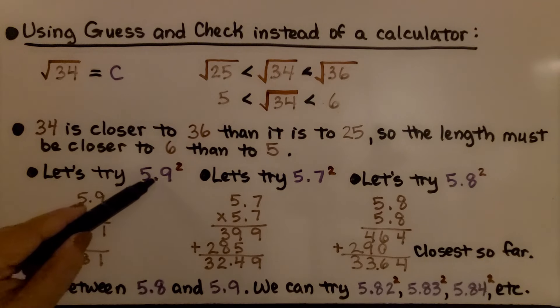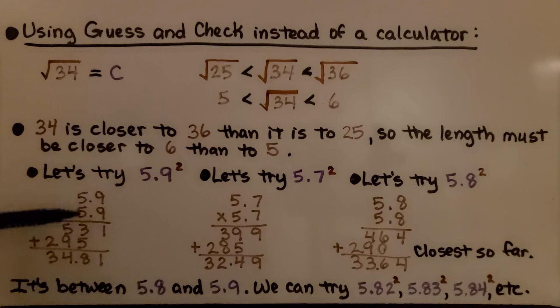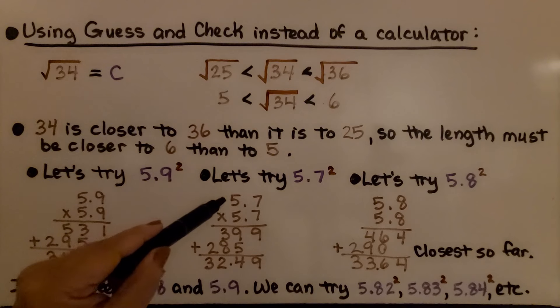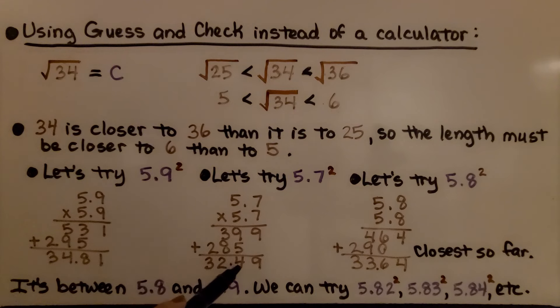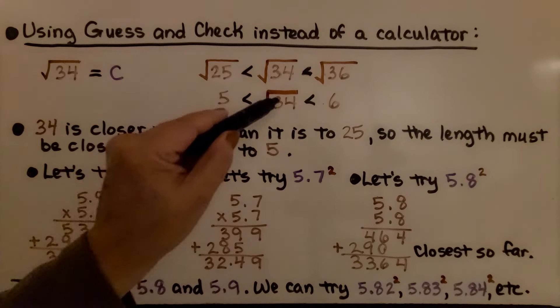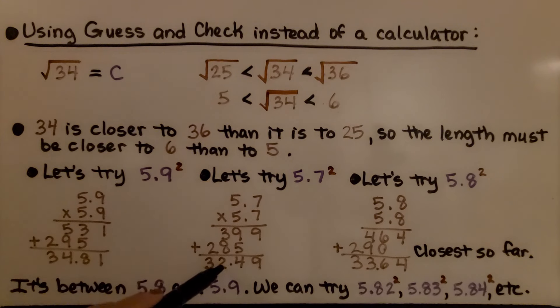Let's try 5.9 squared. We multiply 5.9 times 5.9, and we get 34.81. We went over 34 by 81 hundredths. Let's try 5.7 times 5.7. We get 32.49. That is quite a lot less than 34. Let's try 5.8. We multiply 5.8 times 5.8. We get 33.64, which so far is the closest, which we could use 5.8 if we're rounding to the nearest tenth.